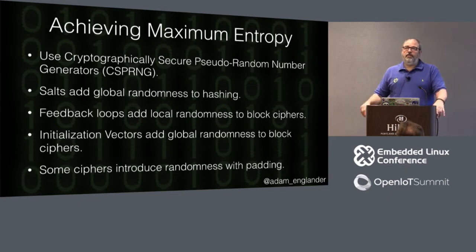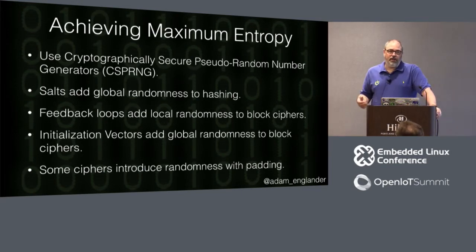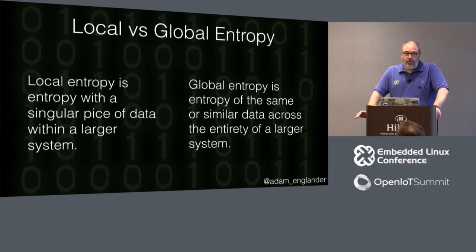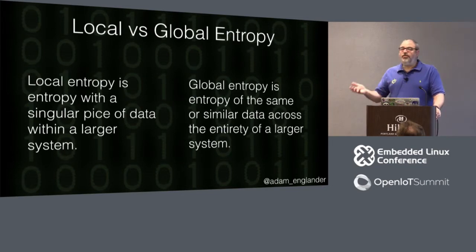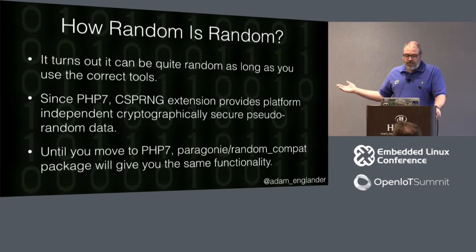There are patterns in the data, and if you don't put that global entropy across your data, you allow someone to get in there and determine what it is — reducing their cracking work. Some ciphers introduce randomness with padding — RSA does randomness based on padding rather than initialization vectors. In entropy, the big thing is local versus global: local means ensuring your data from block to block has entropy, and global means across your larger data set. Initialization vectors and salts help you do that across the entire system. How random is random depends on whether you use the correct tools.